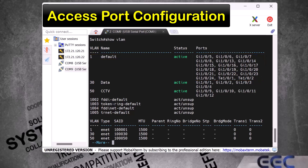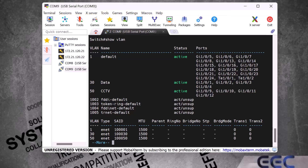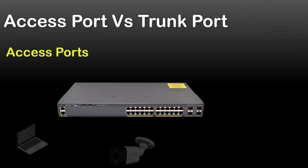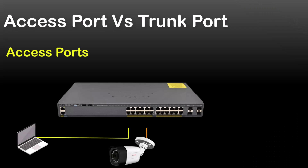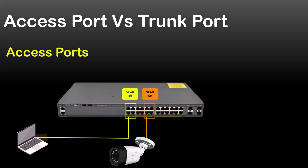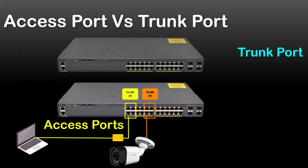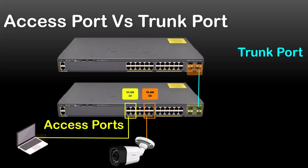I hope you know the difference between access ports and trunk ports — if not, let me explain. Access ports are commonly used to connect end devices to the switch and they pass only a single VLAN's traffic. In my case, ports belong to only one VLAN each, and end devices like PCs or CCTV cameras connect on these ports. Trunk ports are commonly used to connect one switch to another or to an internet router, and multiple VLANs pass through a trunk port.